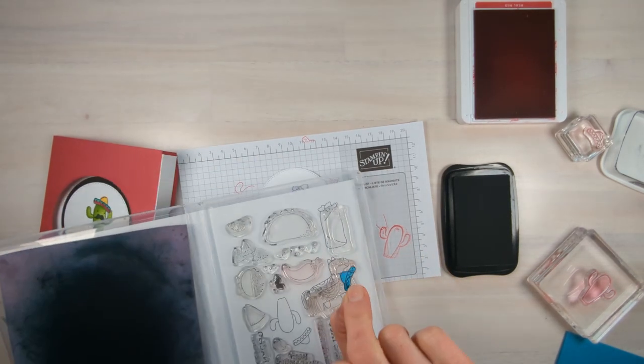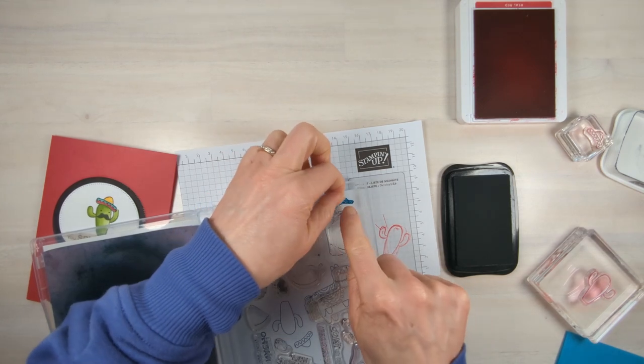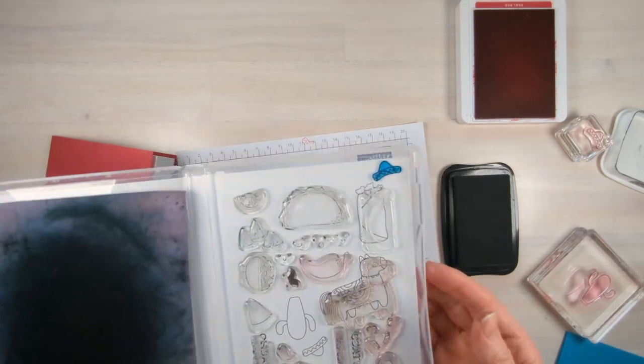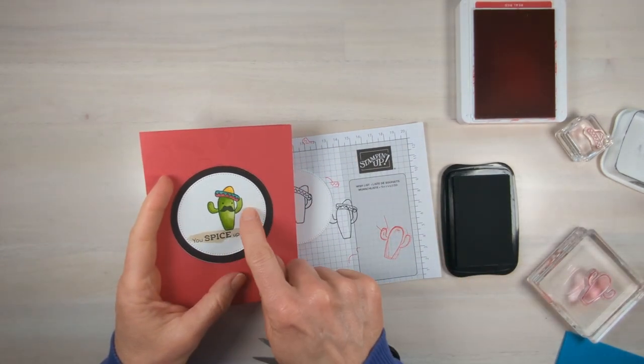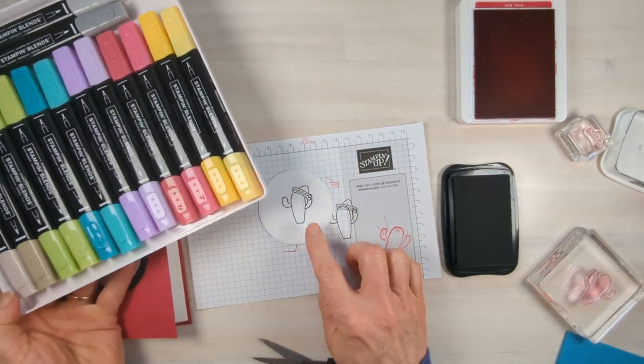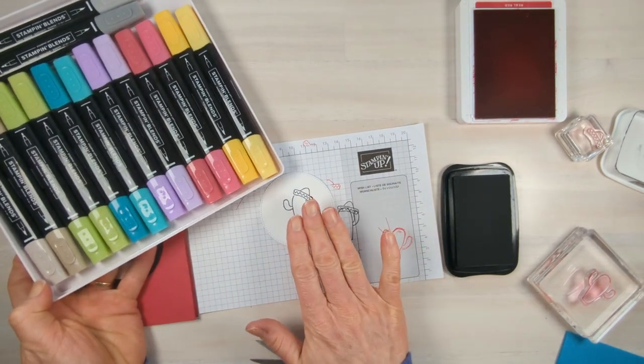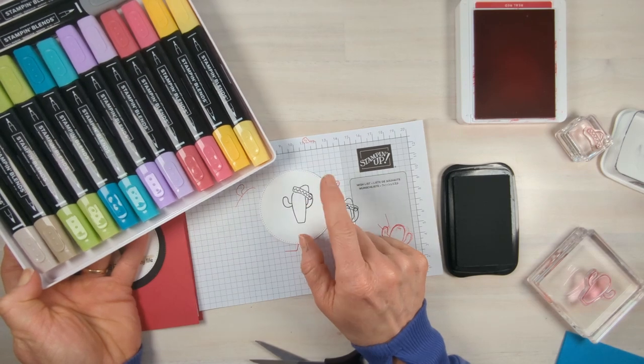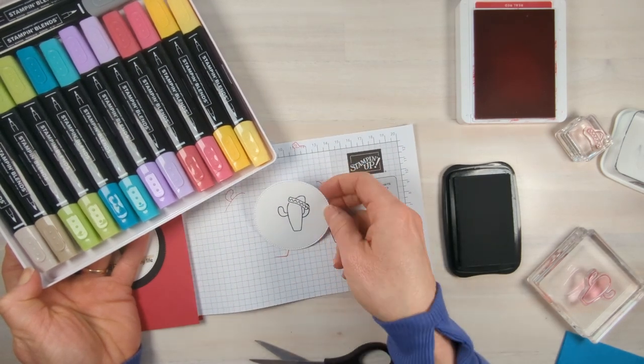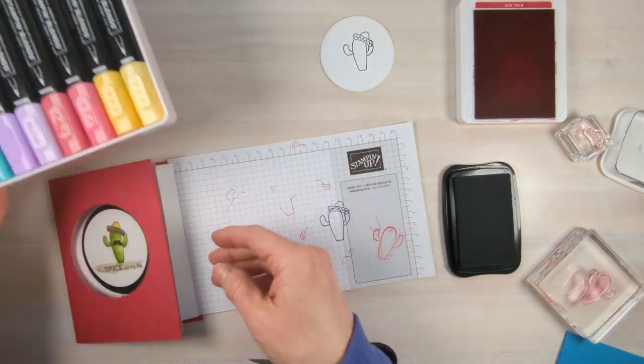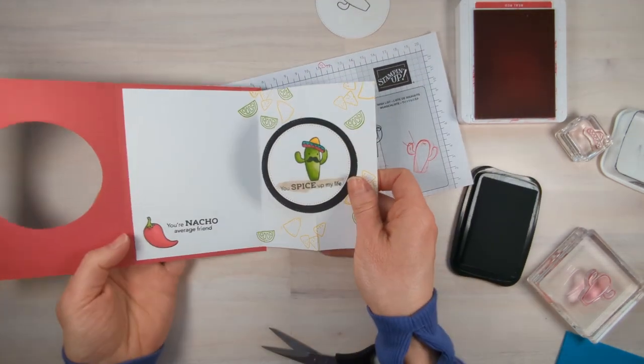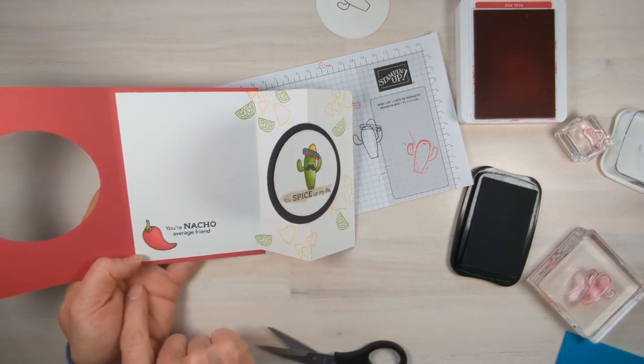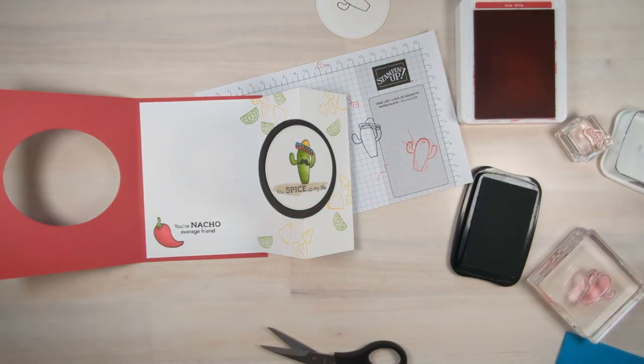Now one tip: because I don't really like fussy cutting, I'm going to just keep that right there. I'm going to be able to reuse it and reuse it until it doesn't stick anymore. Now to get these gorgeous colors here, we're going to use Stampin' Blends. But the reason why we stamped this right now is because I'm going to put the rest of our card together while this is drying. If you color on this too quickly, it's going to smear it.